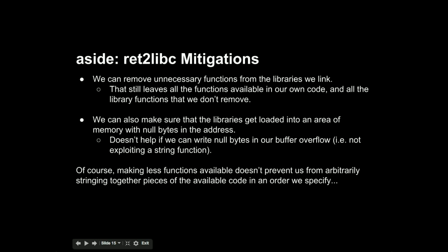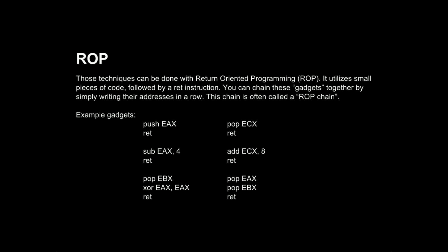Just having fewer functions available to call doesn't prevent us from taking little bits of executable code and stringing them together — which is what Owen talked about last week. That technique is called ROP. We've actually already talked about this today — when we were talking about the way to change the stack pointers, that is essentially ROP. We find these small bits of code called gadgets, and we can string them together and have them execute one after another.